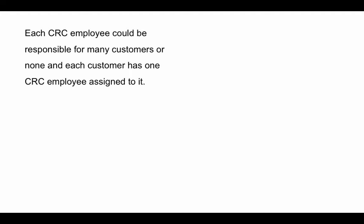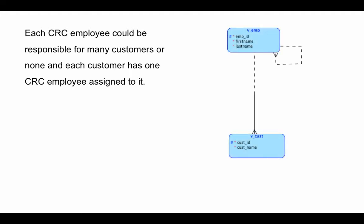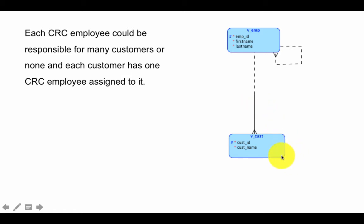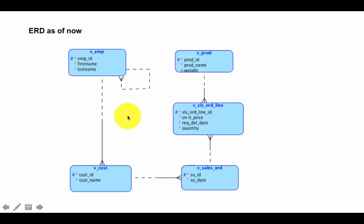Every customer has one CRC employee assigned to it. To model this, both employee and customer are already on our model, so this requirement is not talking about any new entity type — only a relationship among existing entity types. We show the one-to-many relationship between employees and customers: one employee might have many customers or none (dashed line), but every customer is connected to exactly one employee (solid line). Customer has obligatory participation, employee has optional participation.